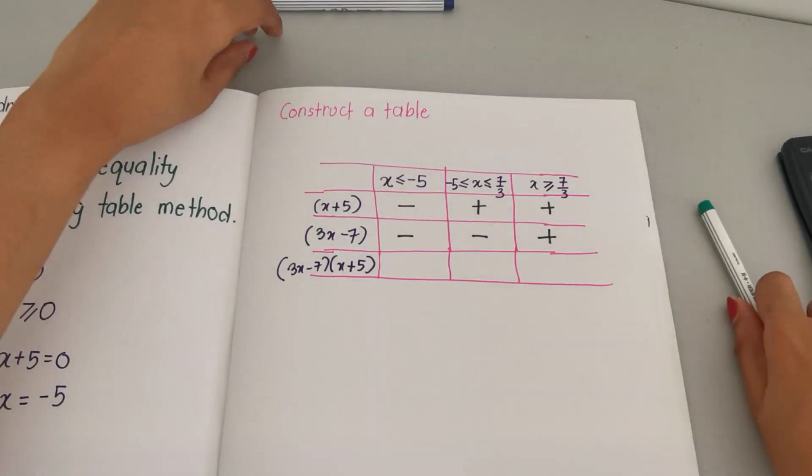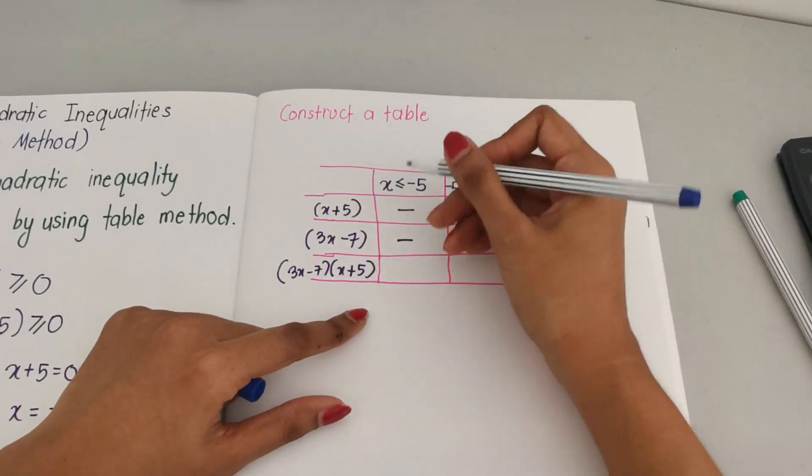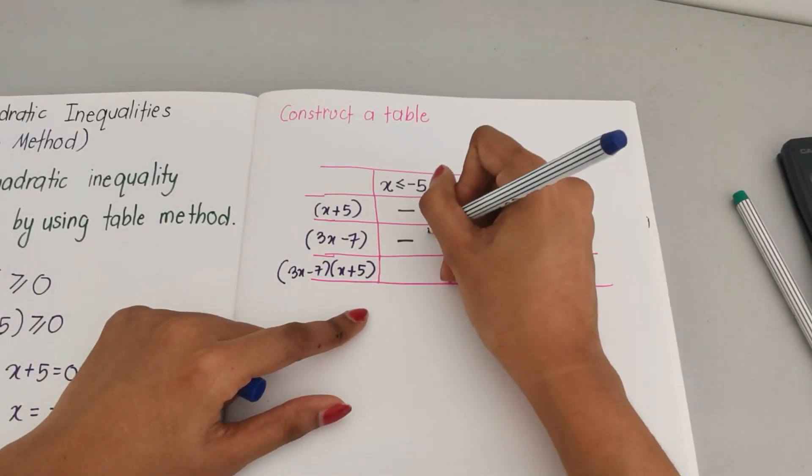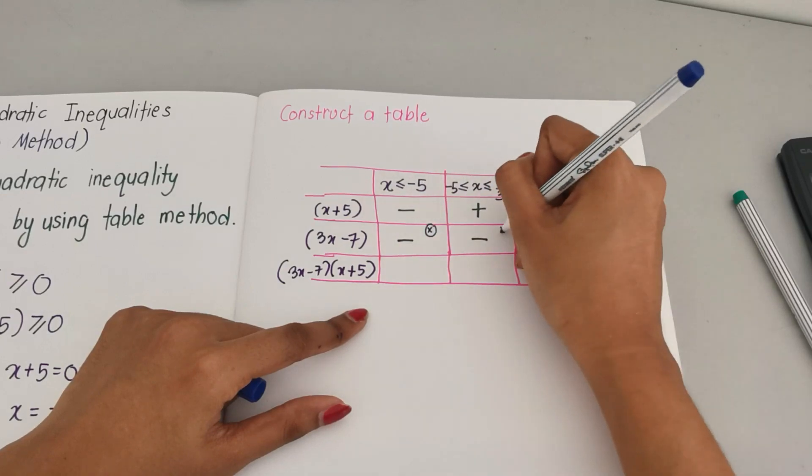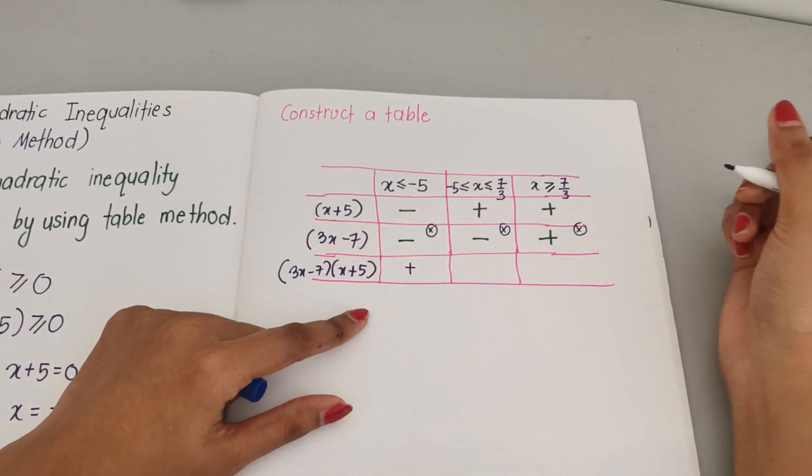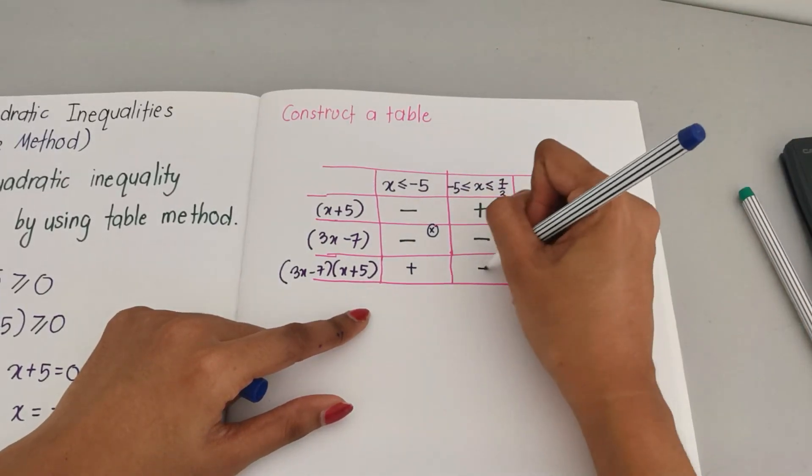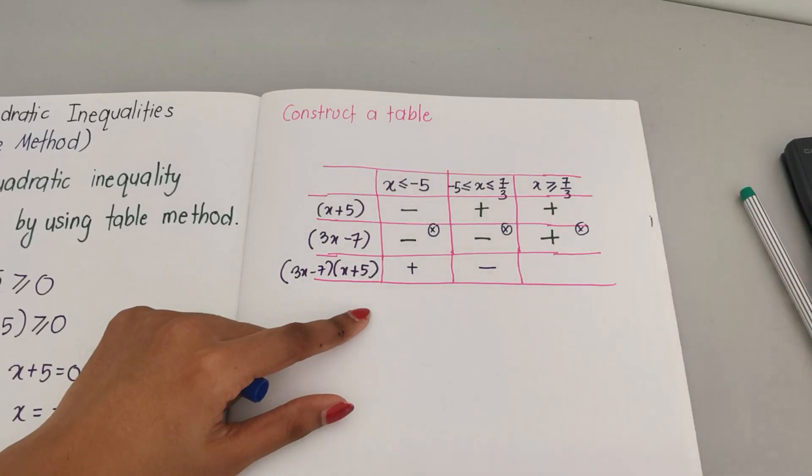Now we already did our calculation. The last row here we're going to times, so negative times negative we get positive, positive times negative we get negative, positive times positive we get positive.